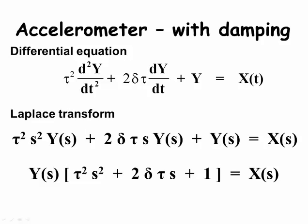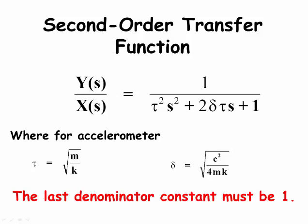We can take the Laplace transform of the second-order differential equation and separate out y(s), writing the expression as the transfer function y(s) over x(s). Here is the second-order expression in the Laplace domain as a transfer function y over x. One important thing to note is that the last coefficient of the denominator must be a 1. That last denominator term cannot be any other constant — it must be 1 for the following analysis to be applicable. If the last term is not 1, say it is 9, you need to divide the numerator and denominator by 1/9.